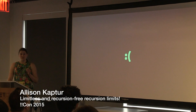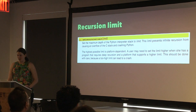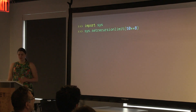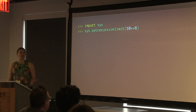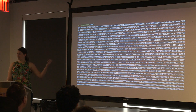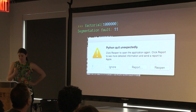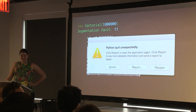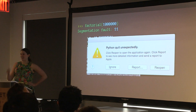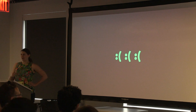But hang on — in Python, we can set the recursion limit at runtime with sys.setrecursionlimit. The docs say a user may need to set the limit higher when she has a program that requires deep recursion. So let's set it to be really big, like 100 million. Factorial of 1,000 totally works. But factorial of a million causes Python to crash with a segfault. That's not better.